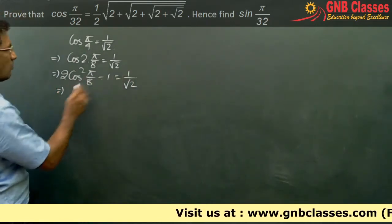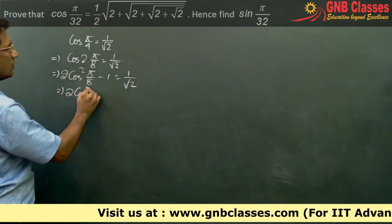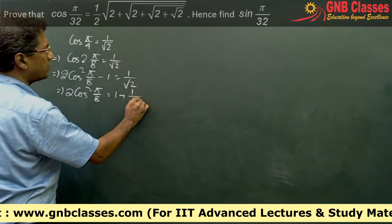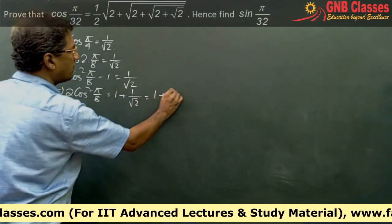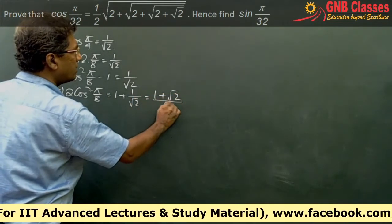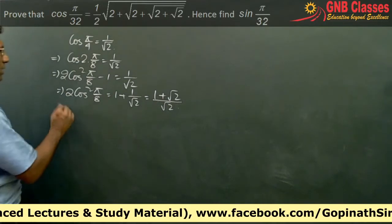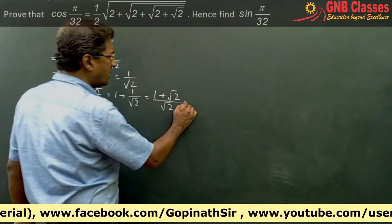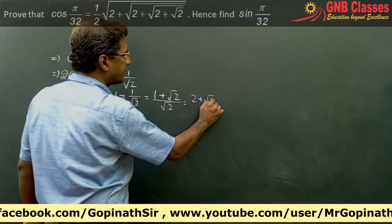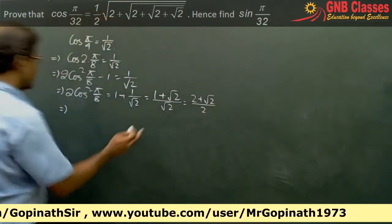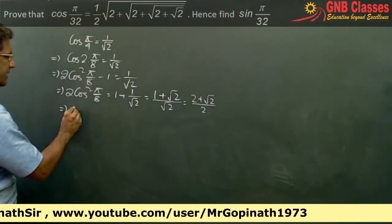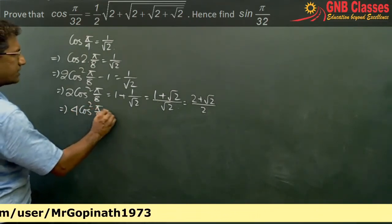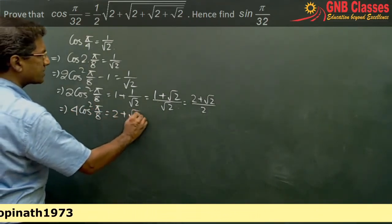Taking 1 to the other side, 2cos²(π/8) = 1 + 1/√2, which gives (1 + √2)/√2. Now multiplying numerator and denominator by √2 and taking 2 to the other side, we get 4cos²(π/8) = 2 + √2.